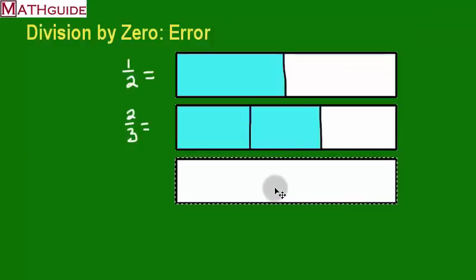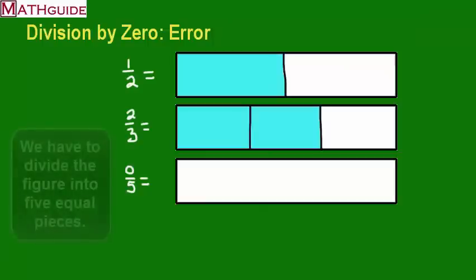Let's take a look at another one. Let's say we have a different fraction, zero-fifths. The denominator says that we have fifths, right? So I have to divide this piece up, this bar, into five equal pieces.